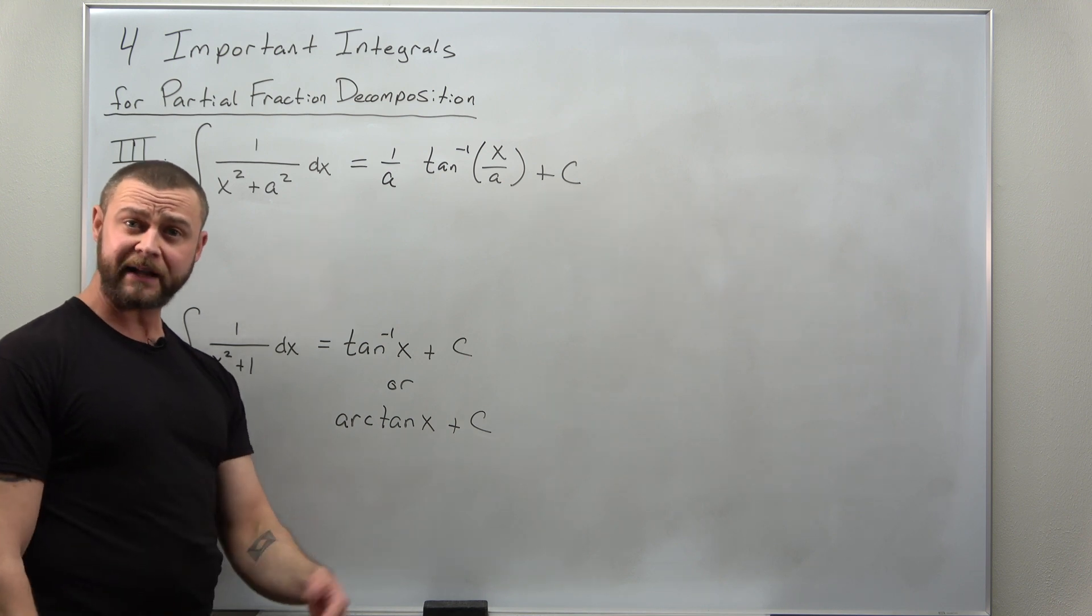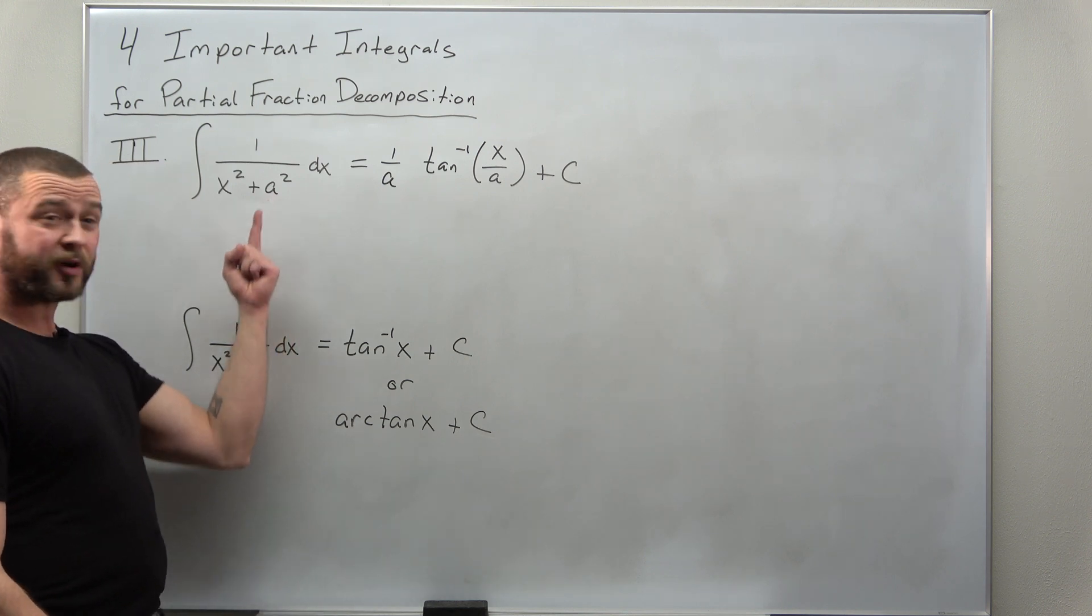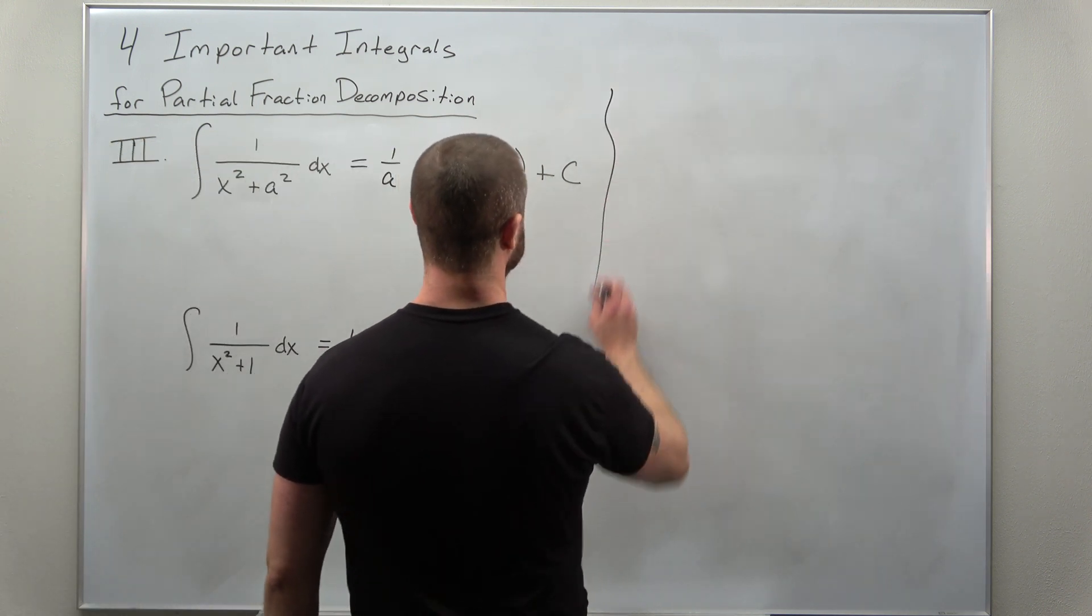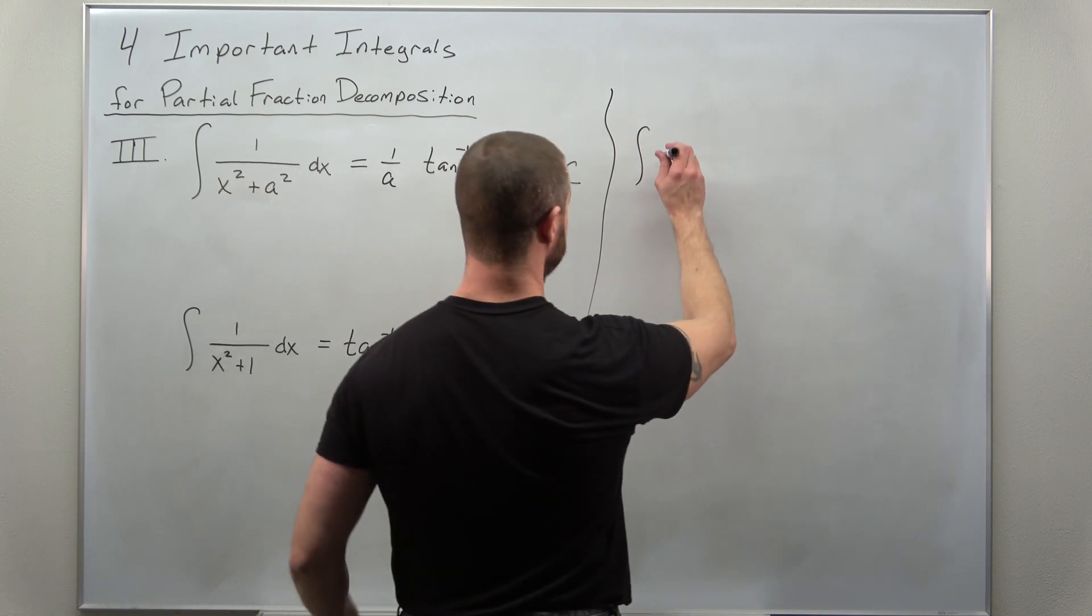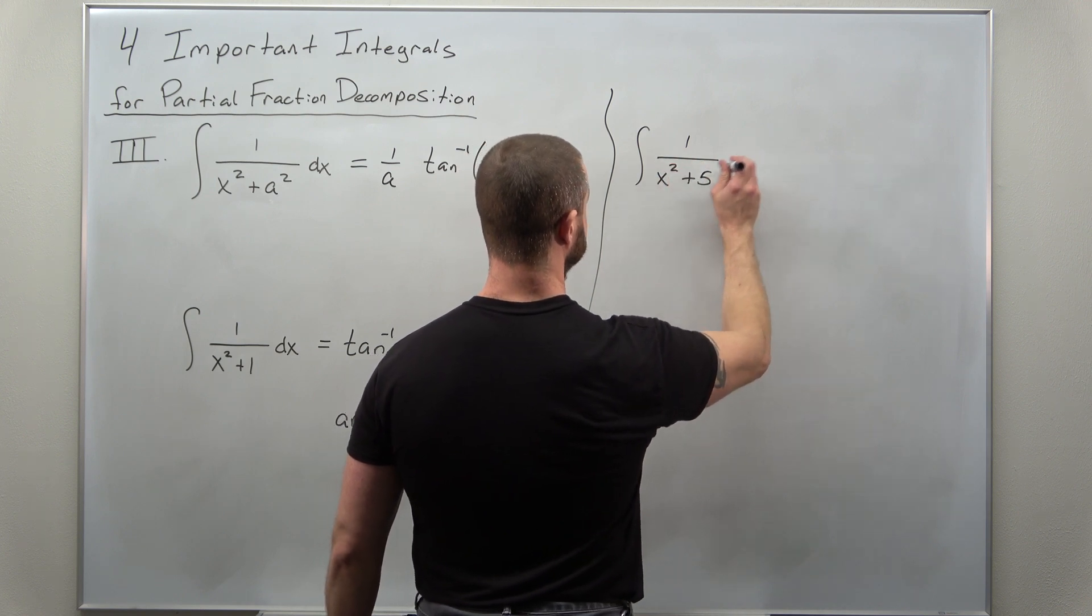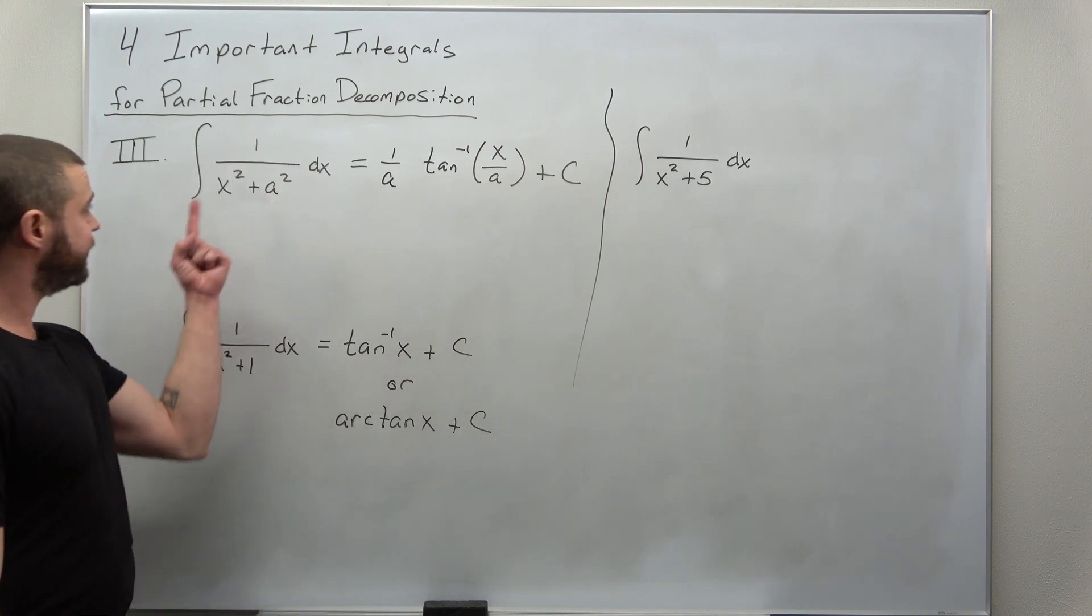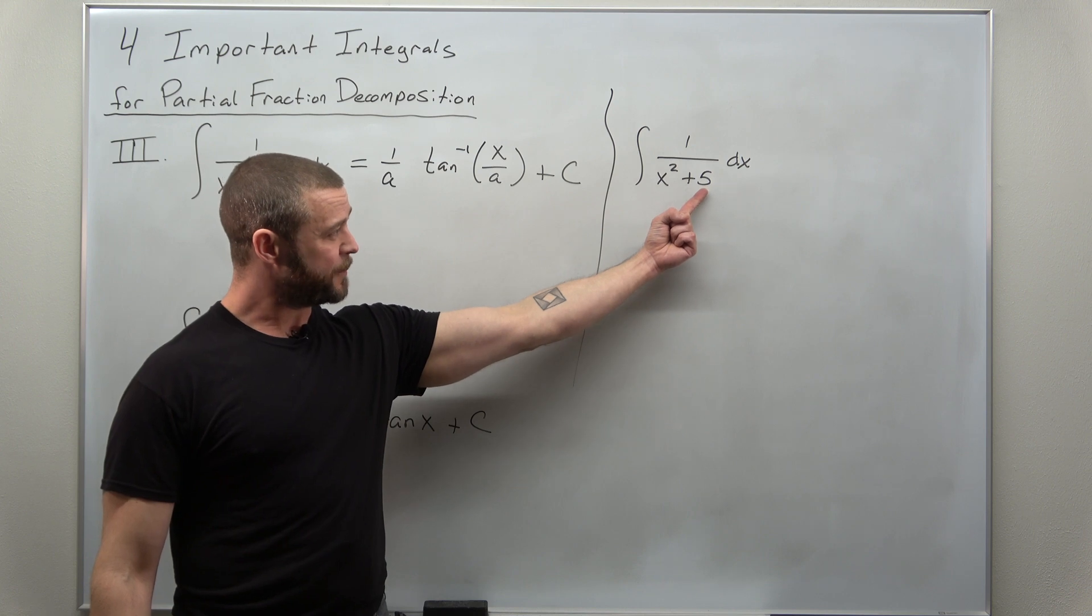Now, let's just put that to use. Let's make that kind of the worst possible case where that number isn't a perfect square. So let's say as our example, we'll go with 1 over x squared plus 5.